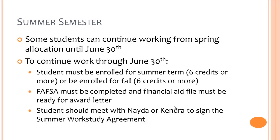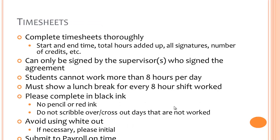In order to continue working past June 30th, the student must meet these requirements: they must be enrolled for summer term at 6 credits or more, or be enrolled for the upcoming fall semester at 6 credits or more. They must also have next year's FAFSA completed and their Financial Aid file must be ready for an award letter. Once these requirements are satisfied, the student needs to meet with Nida or Kendra to do new Work Study paperwork, as July 1st marks the beginning of a new fiscal year. Keep in mind payroll takes about one week for processing, so it is best to have the student set up their appointment in mid-June for a smooth transition.